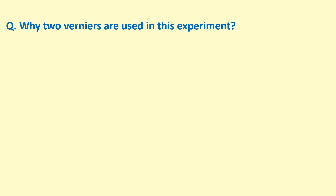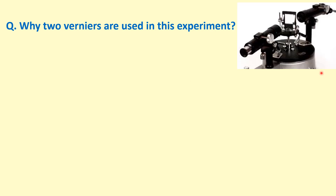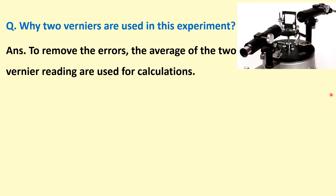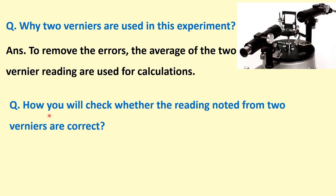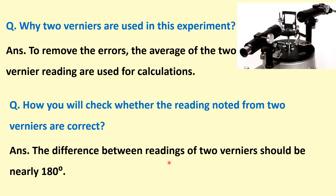Why are two verniers used in this experiment? One vernier scale is on each side of the spectrometer. To remove errors in measurement, the average of the two vernier readings is used for calculations. How do you check whether the readings from the two verniers are correct? The difference between the readings of the two verniers should be nearly 180°, confirming the readings are correct.